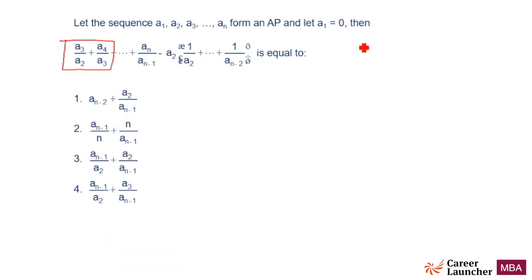Then I will do the same thing A1, A2, A3, A4: 0, 1, 2, 3. What should my answer be in this particular case? A3 by A2, A3 by A2 is 2, plus A4 by A3, A4 by A3 is 3 by 2, which is 3.5. So if I have to check for n equal to 4, my answer has to be 3.5. You can verify this also.